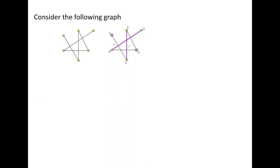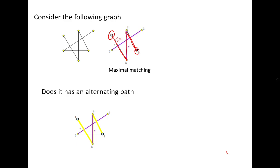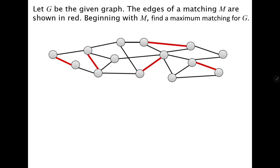Consider another graph with an initial matching marked by purple edges. Vertices one and four are unmatched. Starting from vertex one: this edge does not belong to M, then an edge in M, then not in M — this is an augmenting path. Using this yellow augmenting path, the matching size increases from two to three.